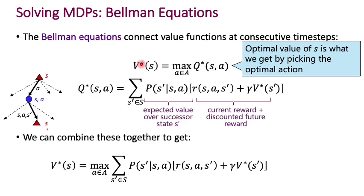By substituting the expression for Q* into the expression for V*, we get the Bellman equation: V*(s) = max_a Q*(s, a), and Q*(s, a) is the expectation over s' of R(s, a, s') plus gamma * V*(s'). We'll see very soon how this is extremely valuable in computing the optimal policy — both in known MDPs where S, A, P, R, gamma are all known, and in reinforcement learning where P and R are unknown.